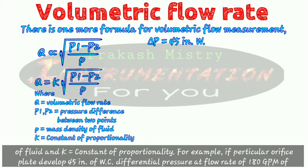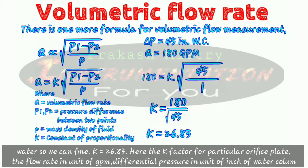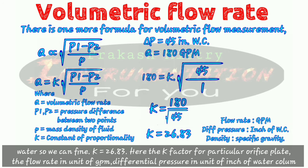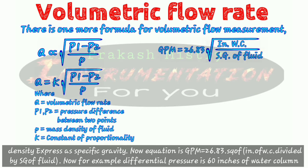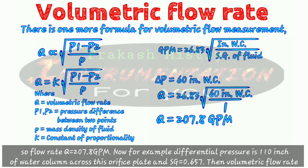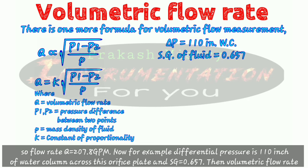For example, if a particular orifice plate develops 45 inches of water column differential pressure at a flow rate of 180 gallons per minute of water, we can find K equals 26.83. The K factor for this orifice plate has flow rate in gallons per minute and differential pressure in inches of water column, with density expressed as specific gravity. So the equation becomes: GPM equals 26.83 times the square root of (inches of water column divided by specific gravity). For example, if differential pressure is 60 inches of water column, the volumetric flow rate is 207.8 gallons per minute. If the differential pressure is 110 inches of water column and specific gravity is 0.657, then Q equals 347 gallons per minute.